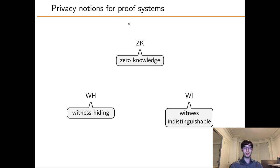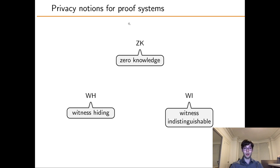More interestingly, we want to look at privacy notions for proofs. If we were not interested in privacy, the prover could simply output the whole witness W and the verifier could run the NP verifier to validate it. But maybe the prover doesn't want to reveal everything it knows. We will define three notions of privacy: zero-knowledge, witness-hiding, and witness indistinguishability.